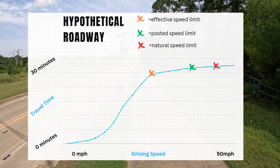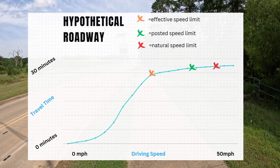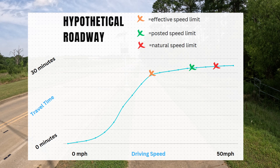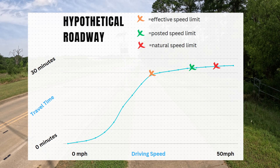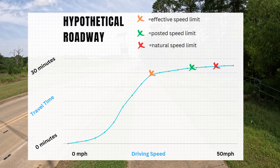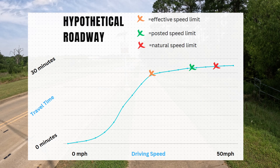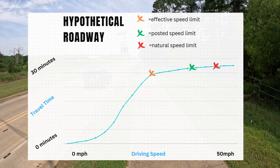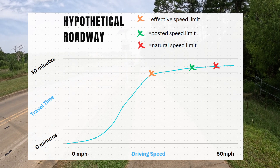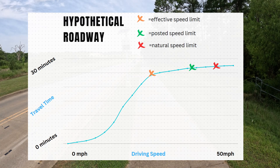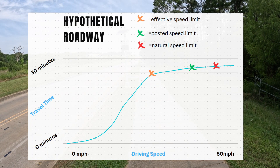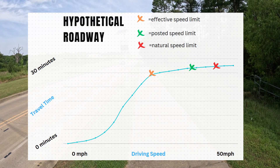You can drive 200 miles per hour if you want, but as long as there's a red light ahead to stop you, you might not get to your destination much faster than someone driving slower. In the same way that the natural speed limit depends on an individual's psychology and will differ from person to person, the effective speed limit will never correspond directly to a specific road, but rather the routes that individual drivers take.